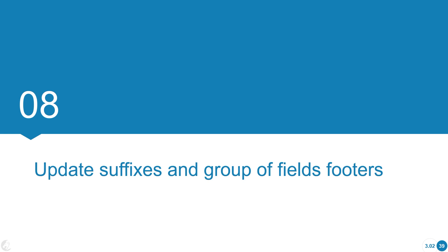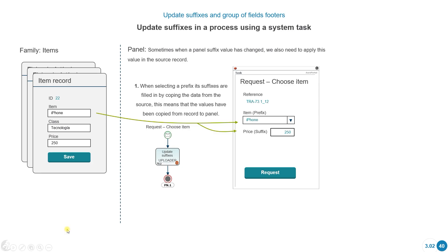Here we have an example of a process where we've selected a prefix item. We've selected a certain element of the family items, and besides that, we also have a suffix.